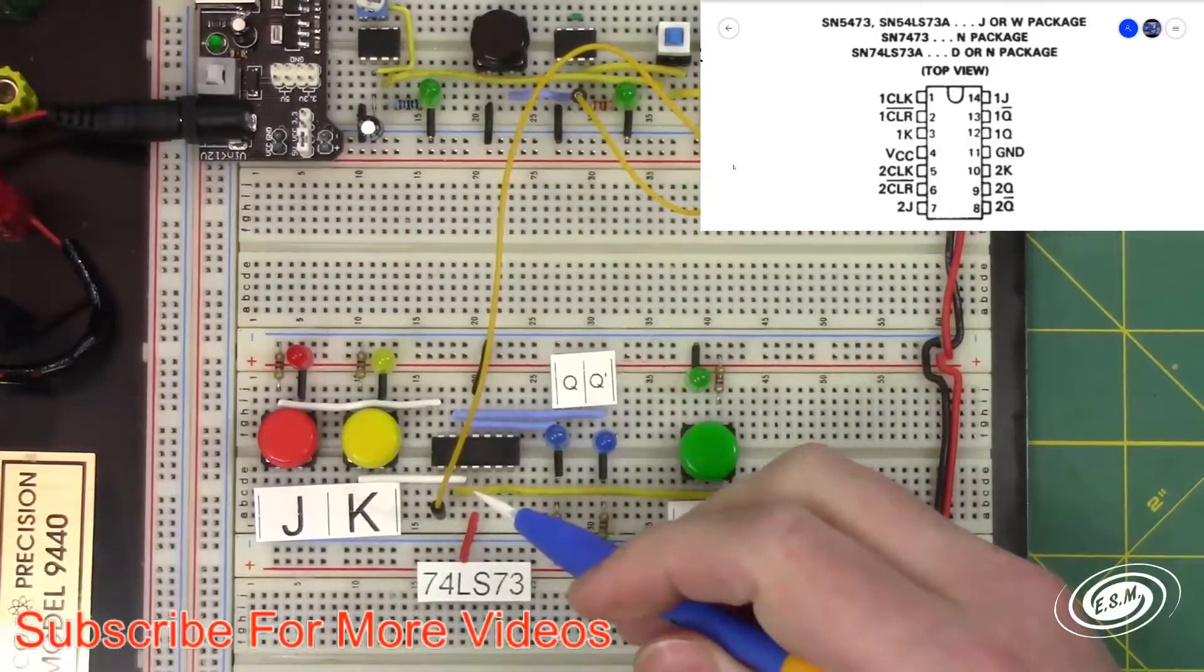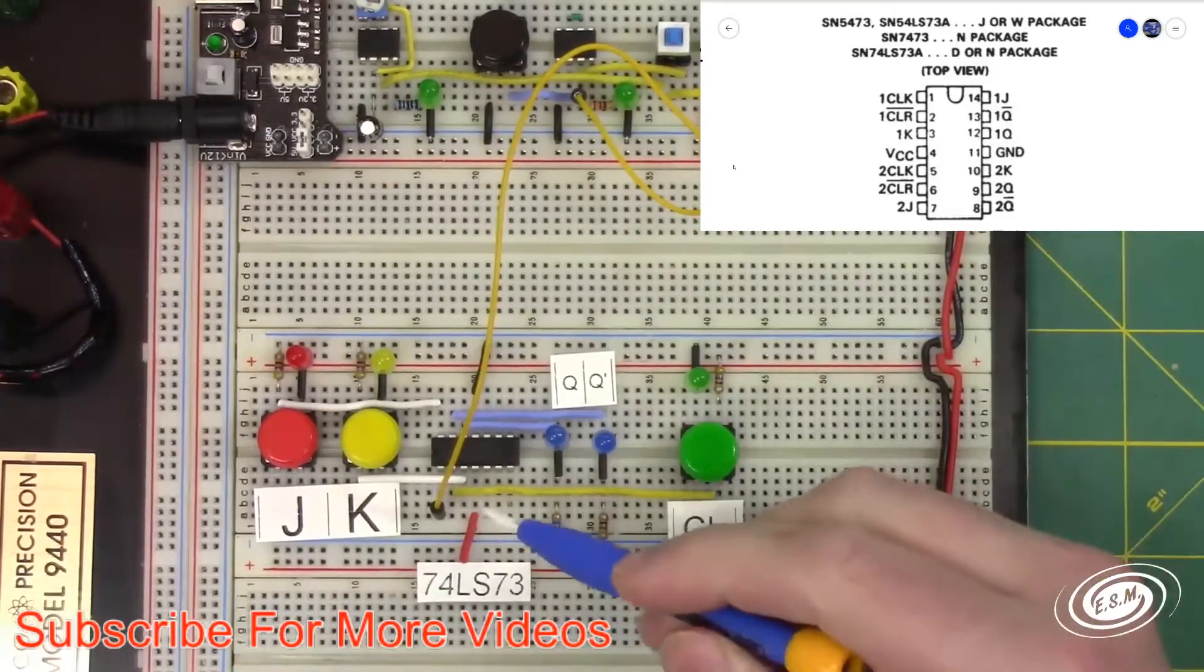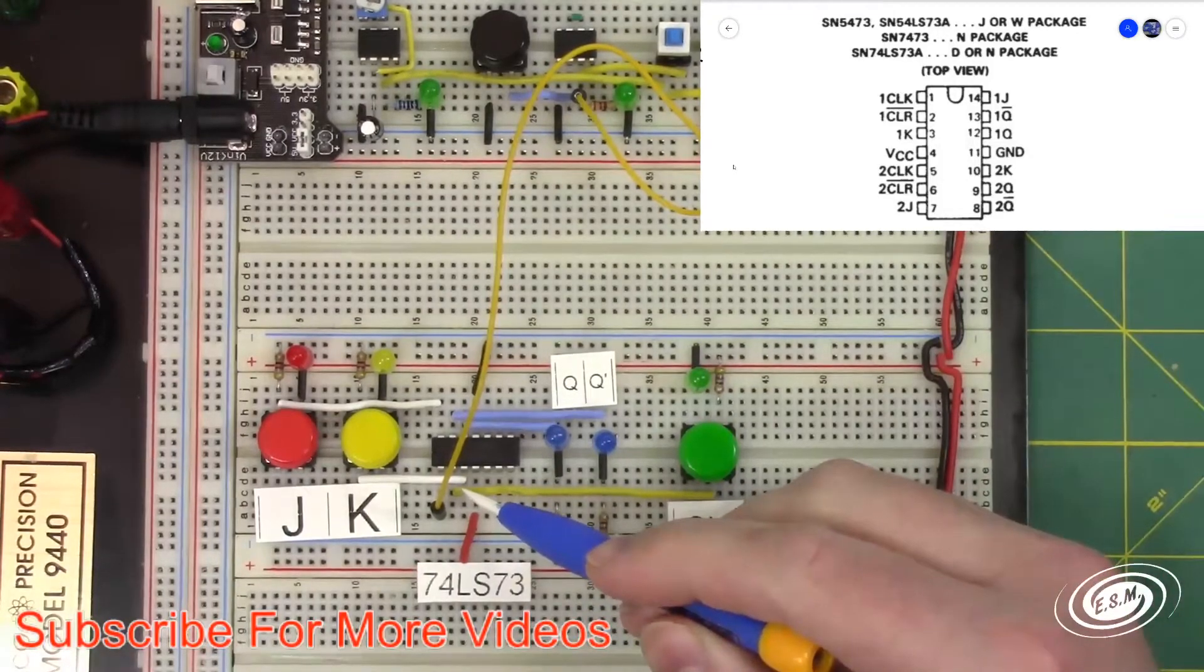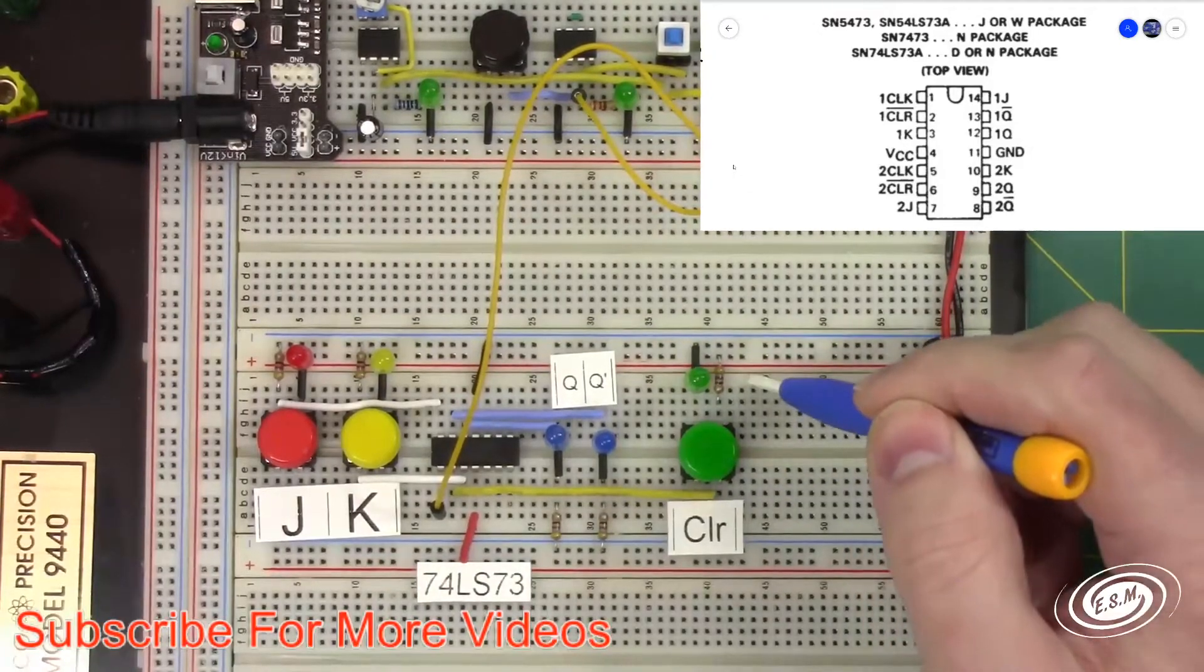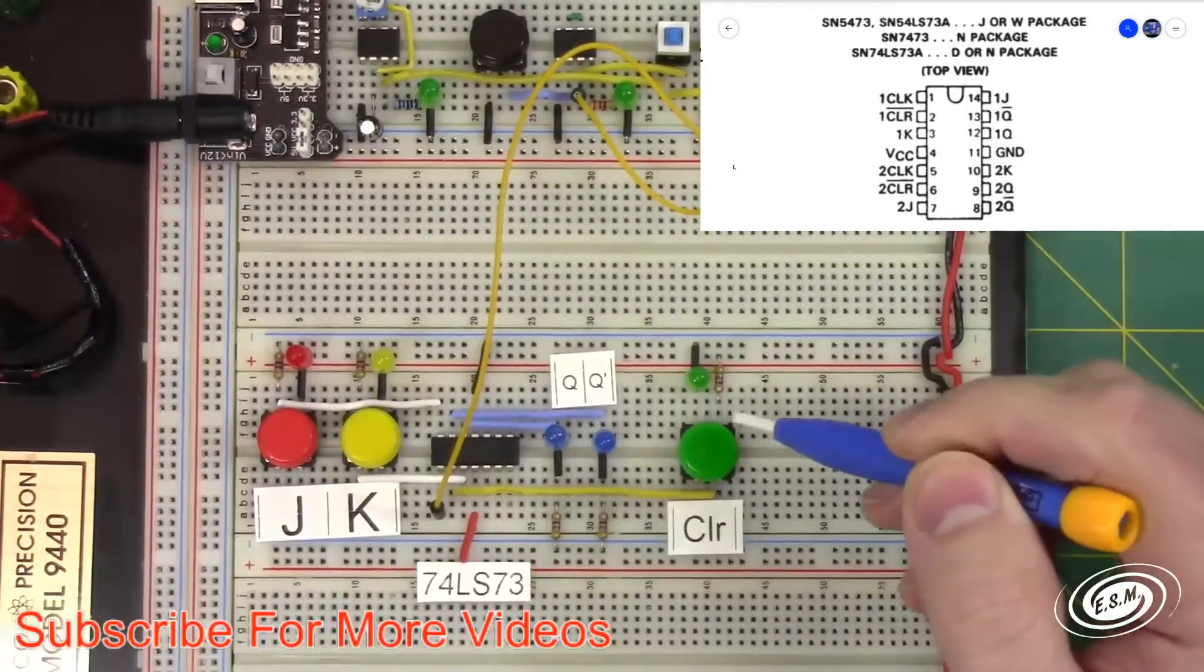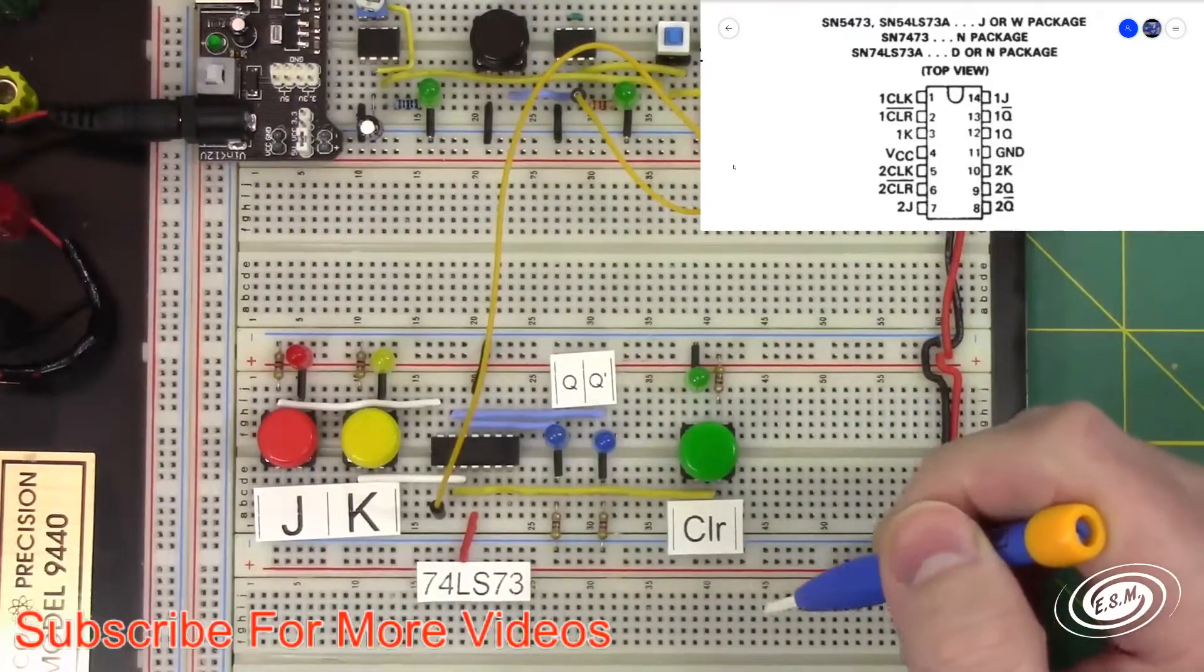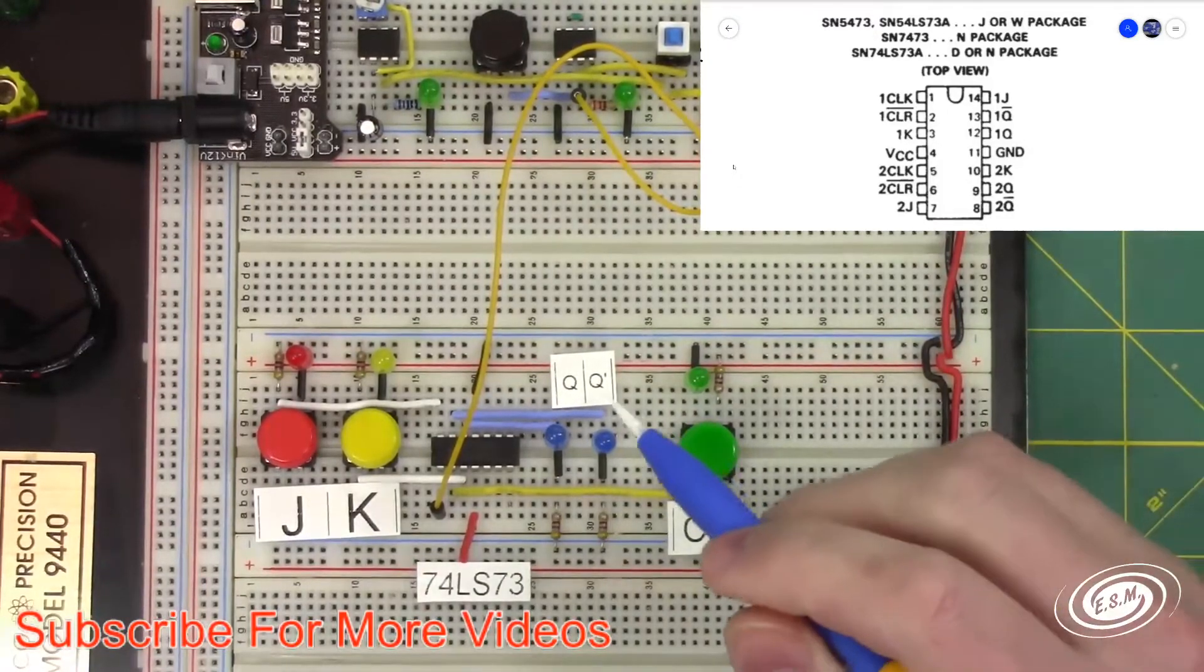I have K going to pin 3. Pin 2 is my clear - it's pulled high and then when you push the button, it becomes low because it's an active low signal to clear it. It does not have a preset.